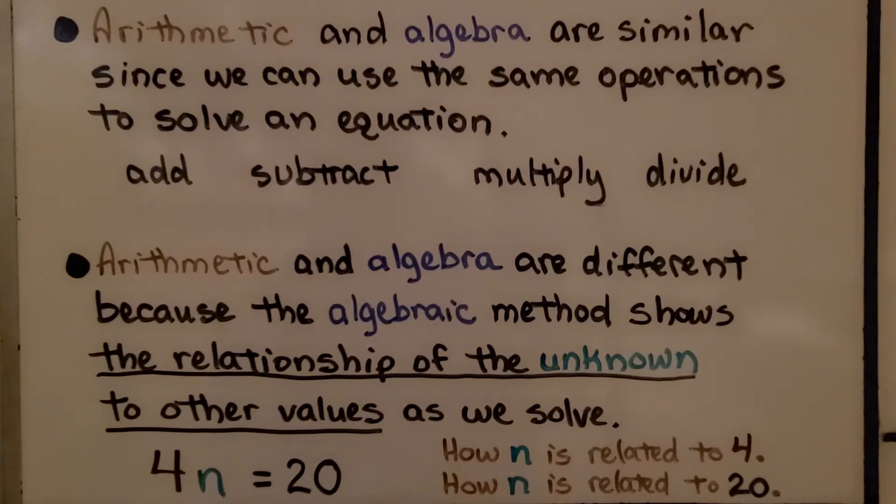But arithmetic and algebra are different because the algebraic method shows the relationship of the unknown to the other values as we solve. If we have 4n equals 20, we see how n is related to 4 or how n is related to 20.